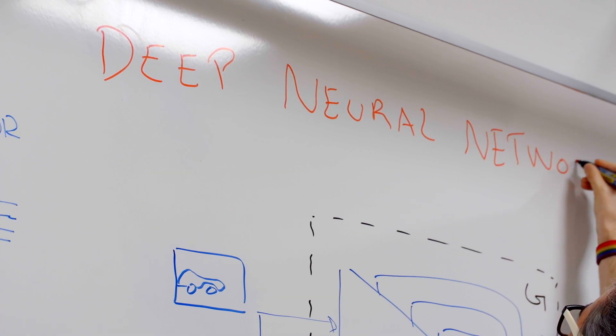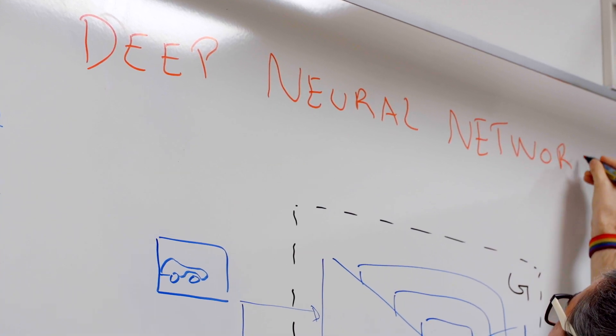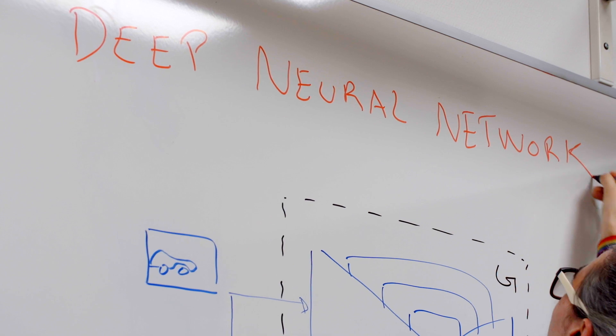So what is machine learning? It basically gives machines the ability to learn and improve automatically through experience or by using data.